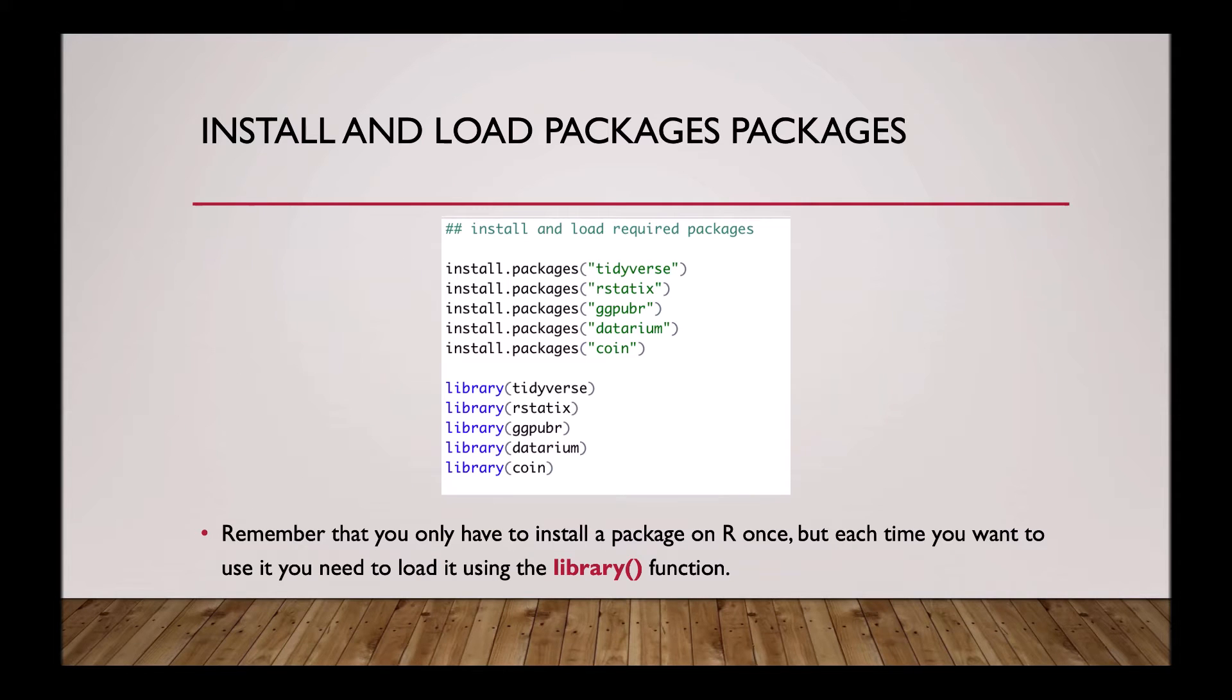The first thing we need to do is install and load packages we need for this tutorial. To install a package, you simply type install.packages and then in brackets and quotation marks the package name. To load them, you type library and in brackets the package name. Remember on R that you only have to install a package once. But each time you want to use it, for example when you start a new script, you need to load it using the library function.